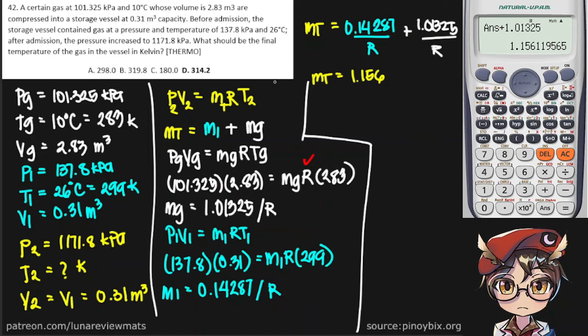So now we have everything we need to find the final temperature. Let's check. We have P2 right here, we have V2 right here, we have MT, and we simply leave R for now. And we're trying to find T2.